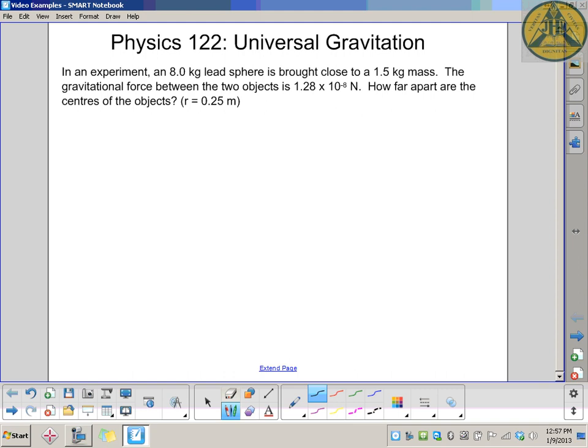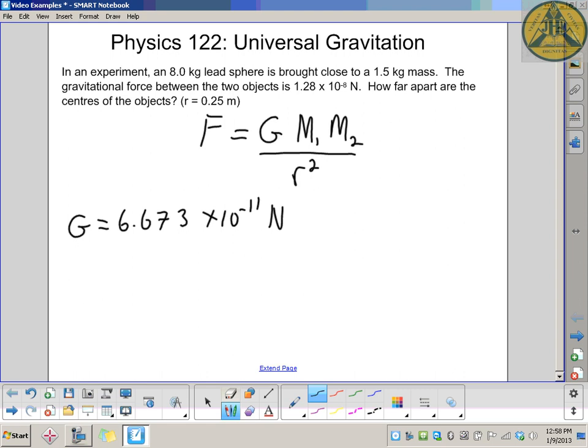This is a standard universal gravitational law question. The force between two objects with mass is the universal gravitational constant times mass 1 times mass 2 over the distance between them squared. The universal gravitational constant capital G is always 6.673 times 10 to the negative 11, and the units are newtons meters squared per kilogram squared.